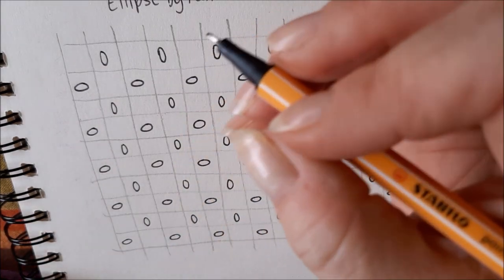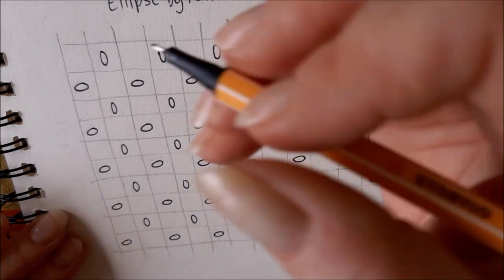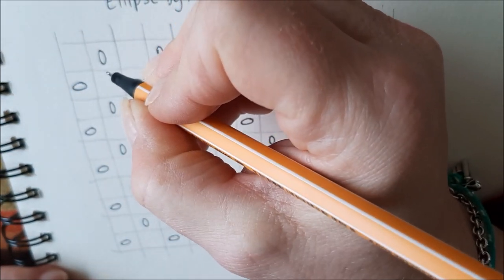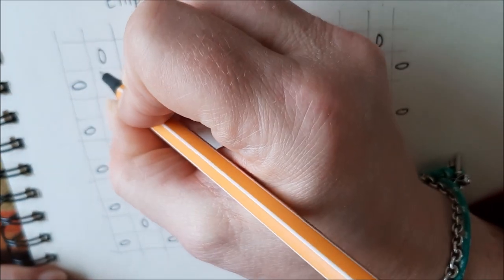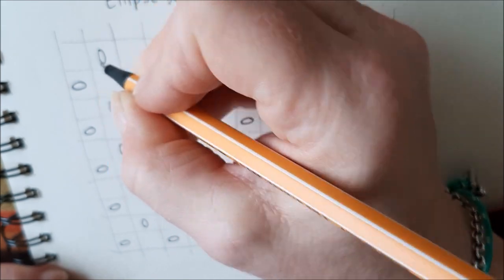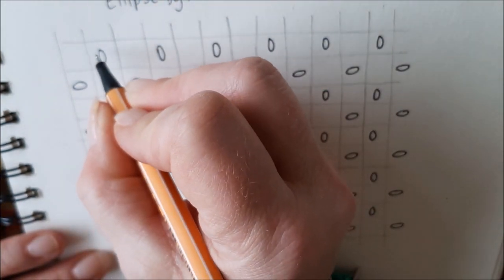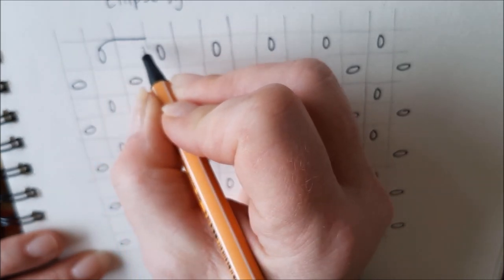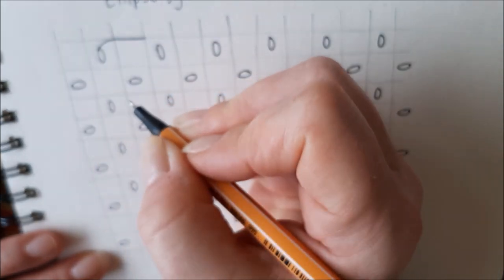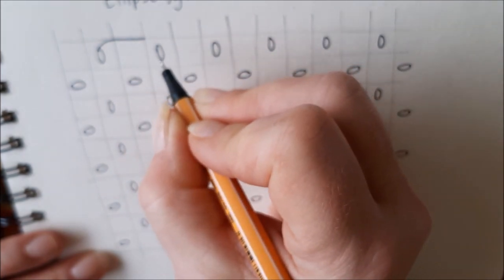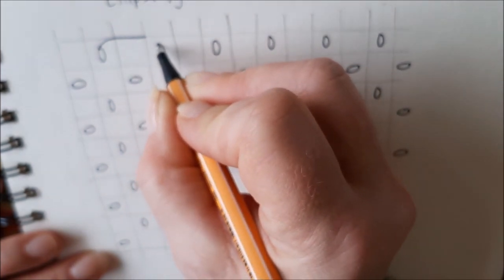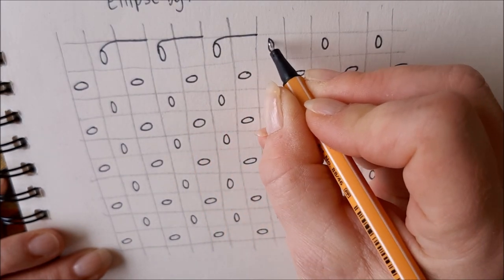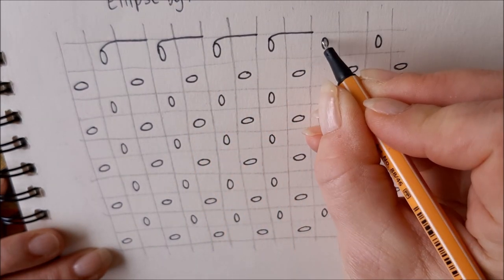Next step is to draw lines. I will show you. We start off with, well let's start off with the first row. On the top of this oval we draw a line to the right till the next box, the empty box. And we do that with all the ovals which are standing up. Just overdraw your grid line.